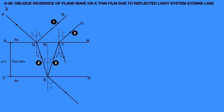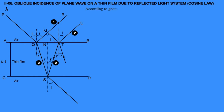Assume this refracted light ray TU is also ray 2. Now, draw a line from point T on light ray 1 (QR), perpendicular to it, reaching point M. At point T on surface AB and line TM, both make an angle I. According to geometry, angle QTM equals I. Angle QSN equals R, and angle TSN equals R.